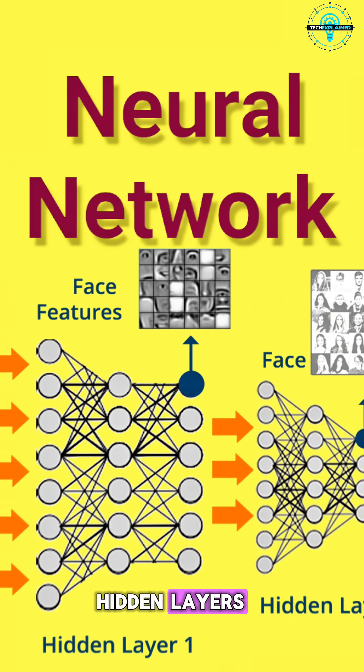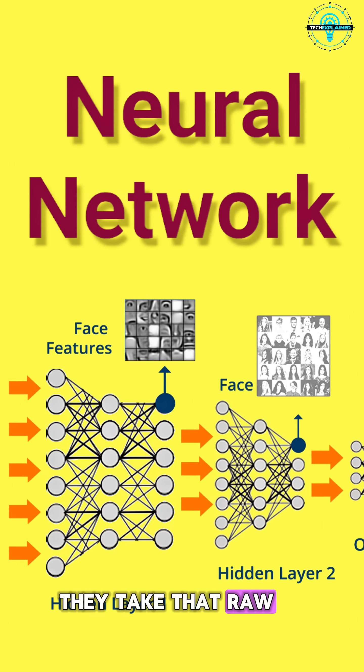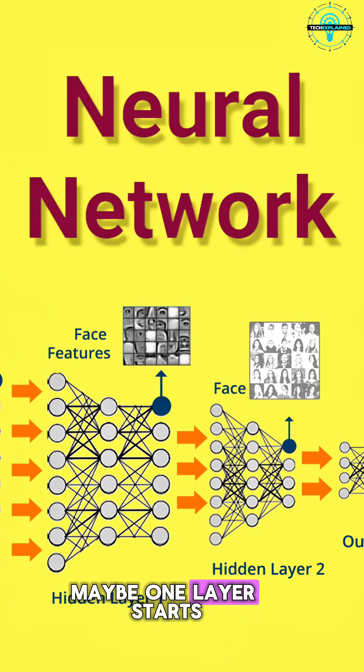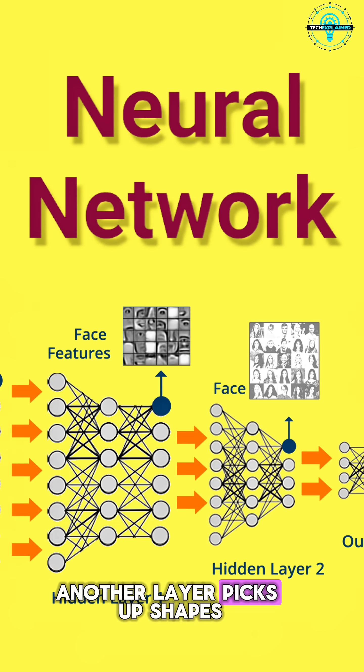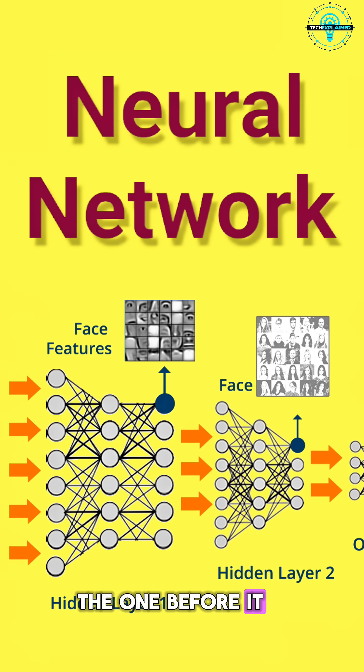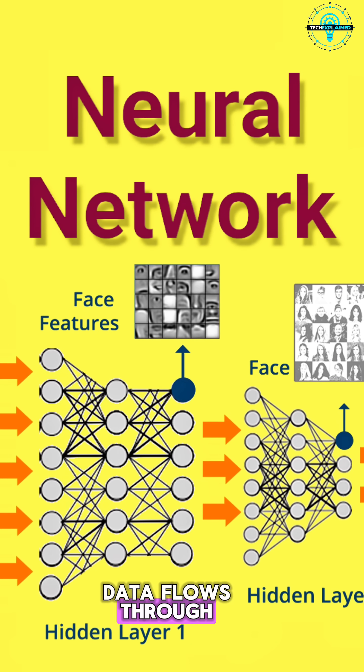Then we've got the hidden layers. These are like the behind-the-scenes thinkers. They take that raw data and start breaking it down, bit by bit. Maybe one layer starts to notice edges in an image, another layer picks up shapes, and another starts recognizing actual objects. Each layer builds on the one before it, making smarter and more specific decisions as the data flows through.